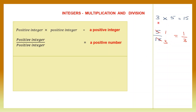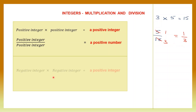So my answer is positive. When I multiply a positive integer with another positive integer, my answer is a positive integer. When I divide a positive integer by a positive integer, my answer is also positive. Now this is called a positive number — it's not an integer. Integers are not in the form of fractions, but my division can have an integer as an answer also.